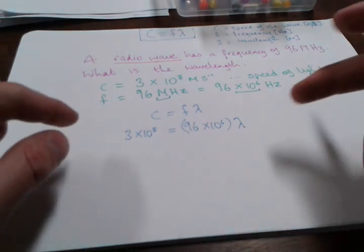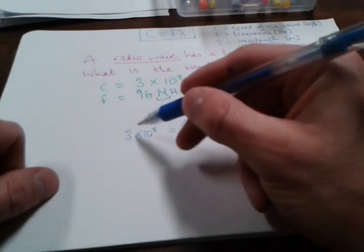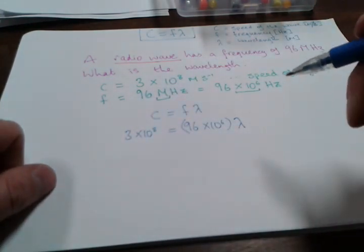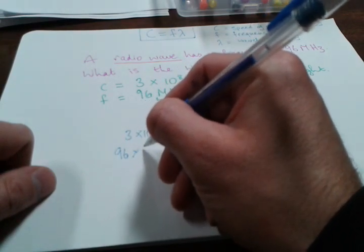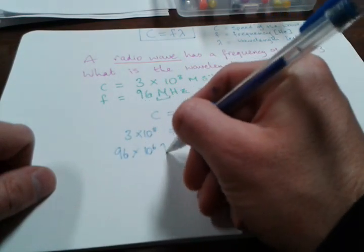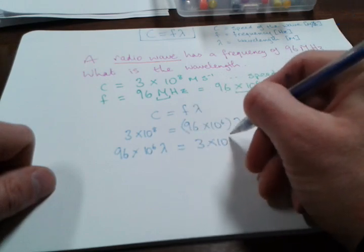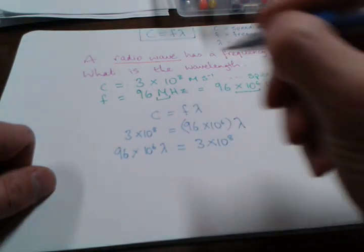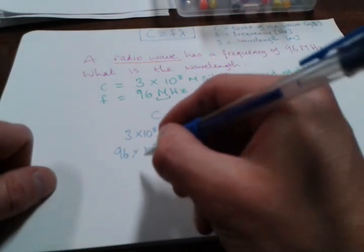To make this easier, I'm going to switch the sides—move this bit over to this side and this bit over to this side of the equal sign, which just makes life a little bit easier. So 96 × 10^6 lambda equals 3 × 10^8.